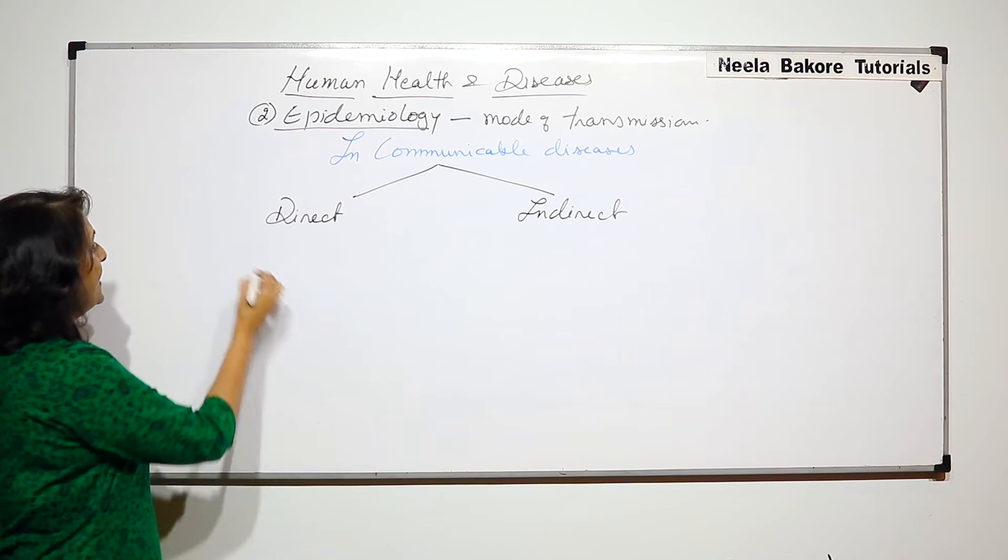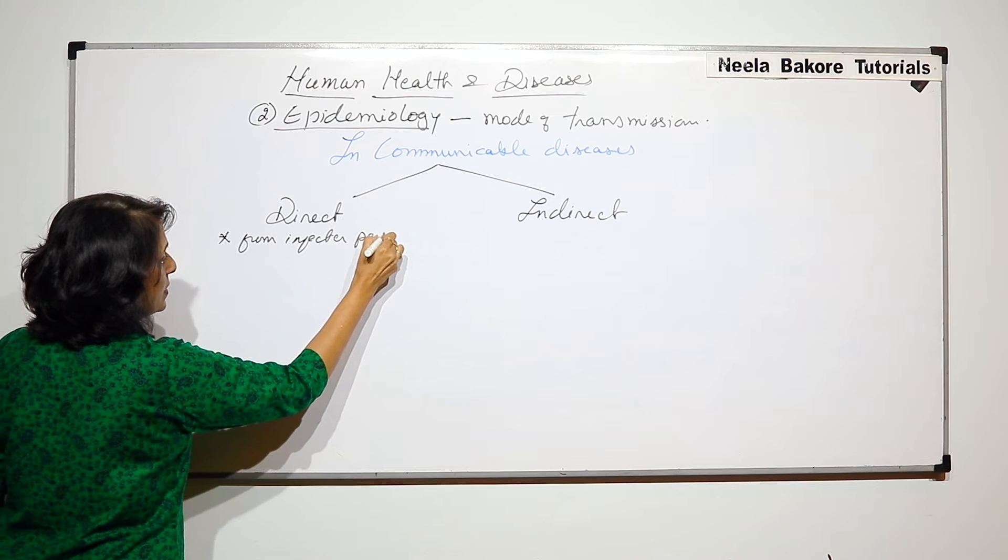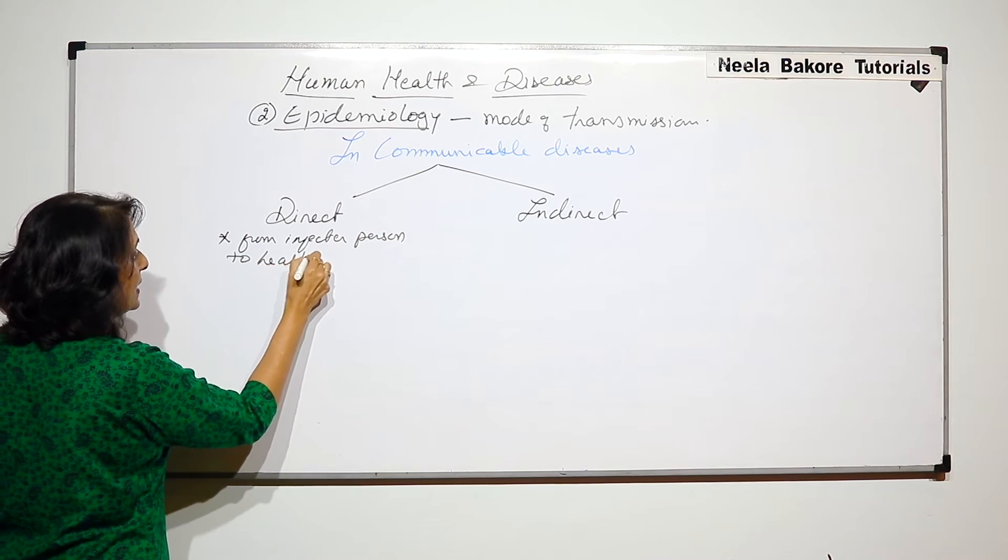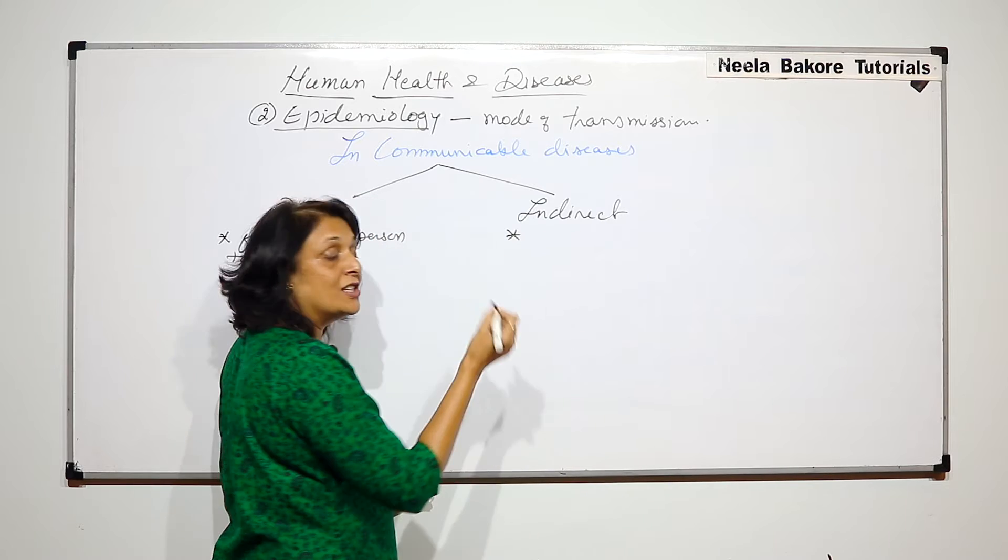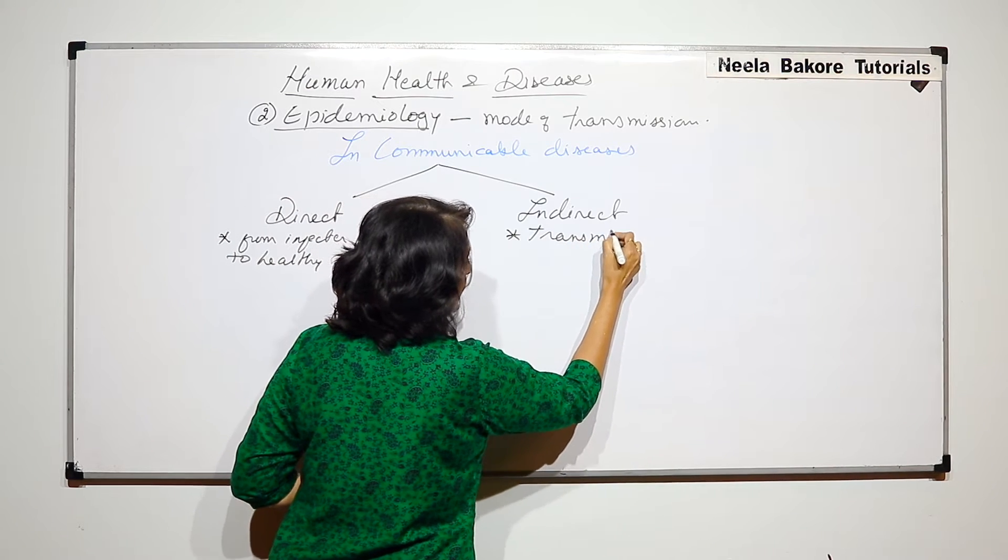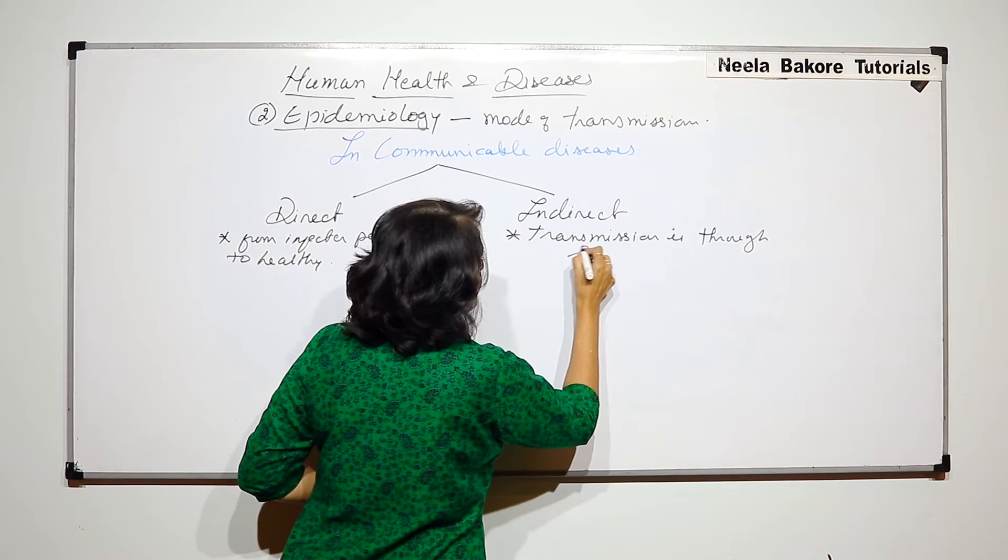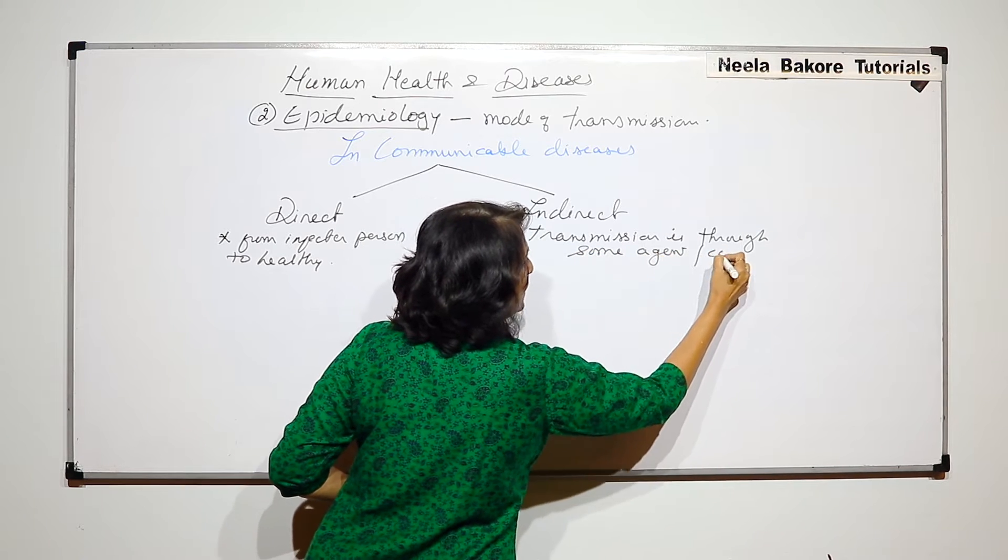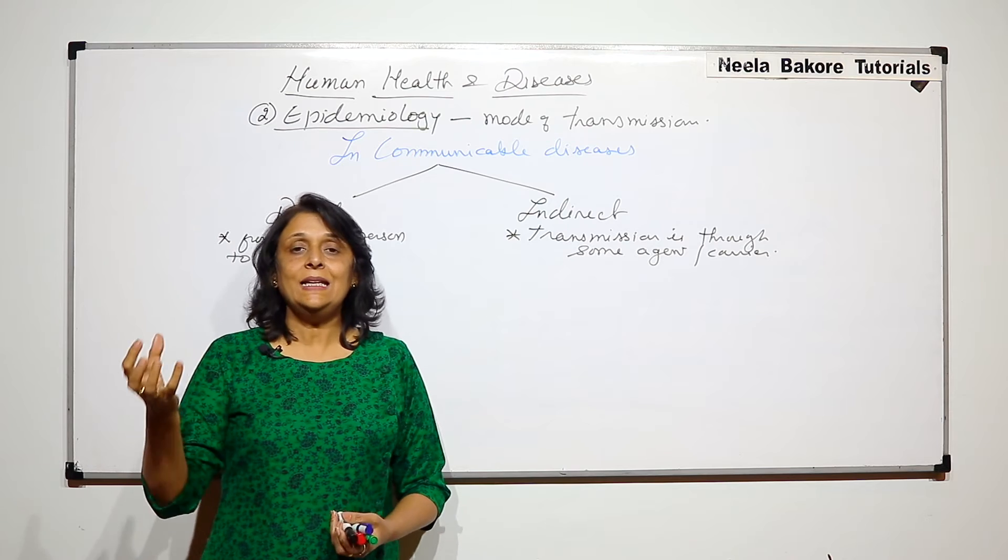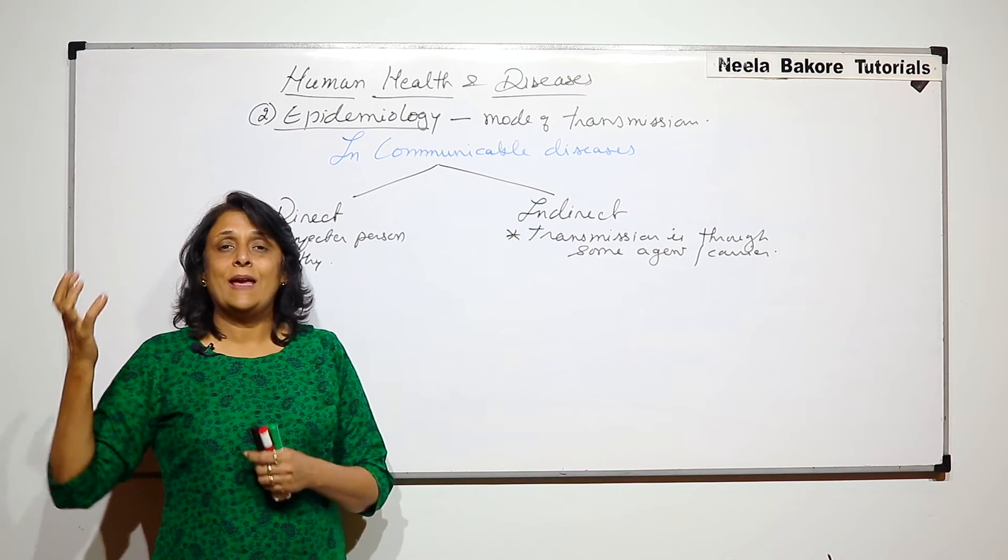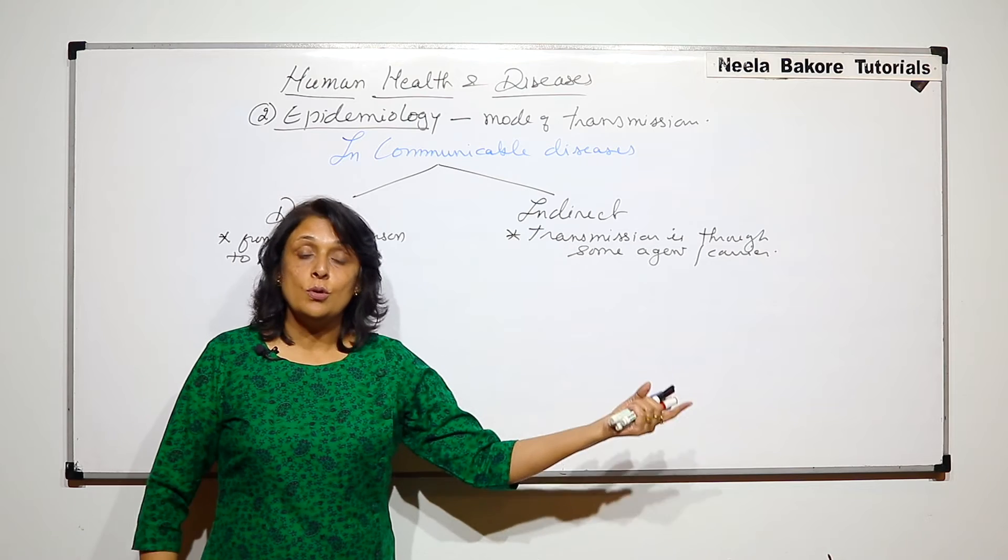Now what is the basic difference? Direct is from infected person to healthy directly and indirect means the transmission of disease is through some agent or carrier. It is not necessary that the agent has to be living. It can be anything, any substance, anything which is going to carry that pathogen, the disease causing agent, from the infected person to the healthy person.